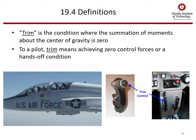Now we'll go into some definitions. Trim is the condition where the summation of the moments about the center of gravity is zero. But to a pilot, trim means achieving zero control forces — or the ability to take your hands off the controls. The actual trim control in the aircraft is a stick with a coolie hat, or in a small aircraft a wheel, which the pilot moves to zero out the forces.